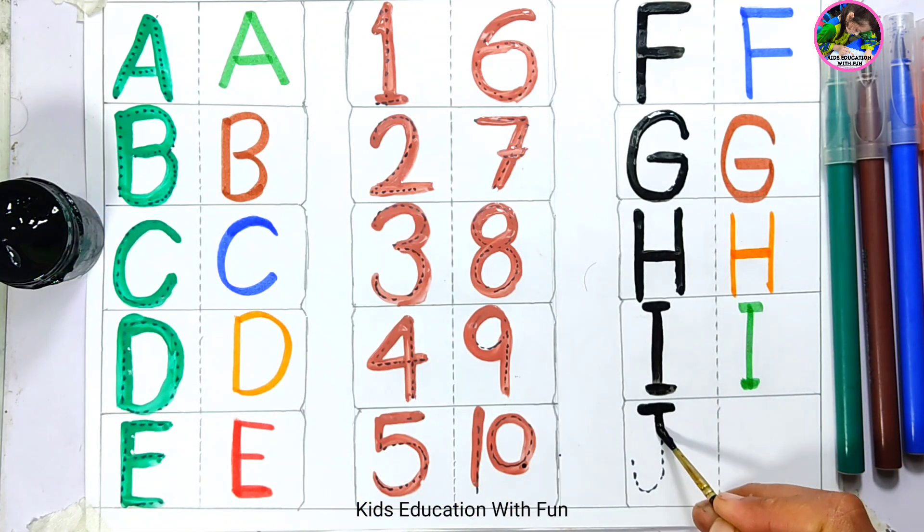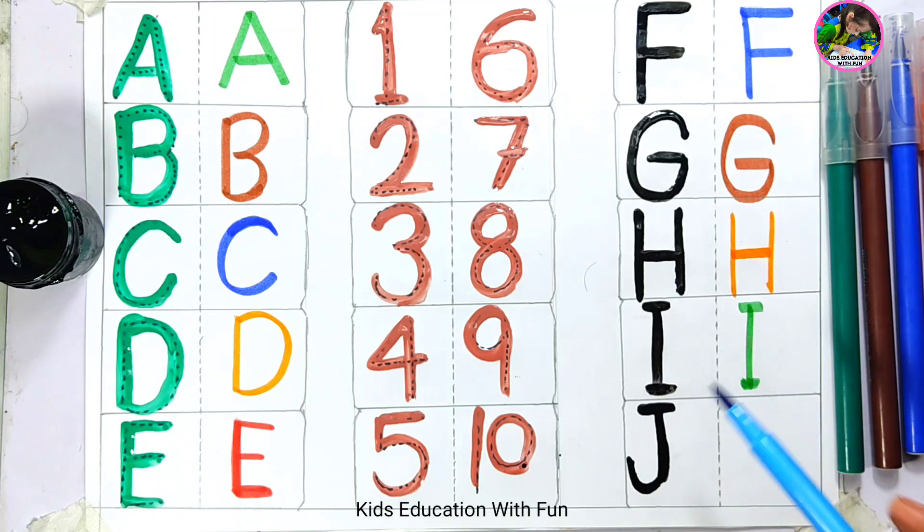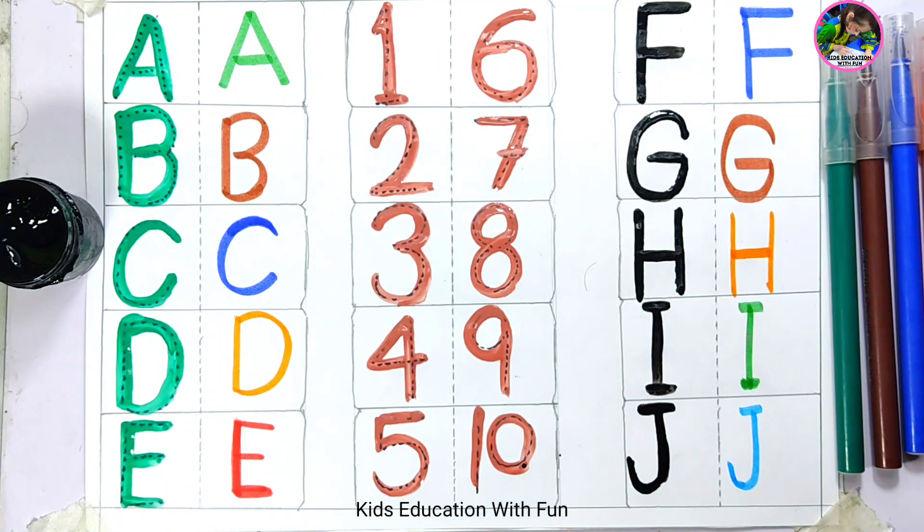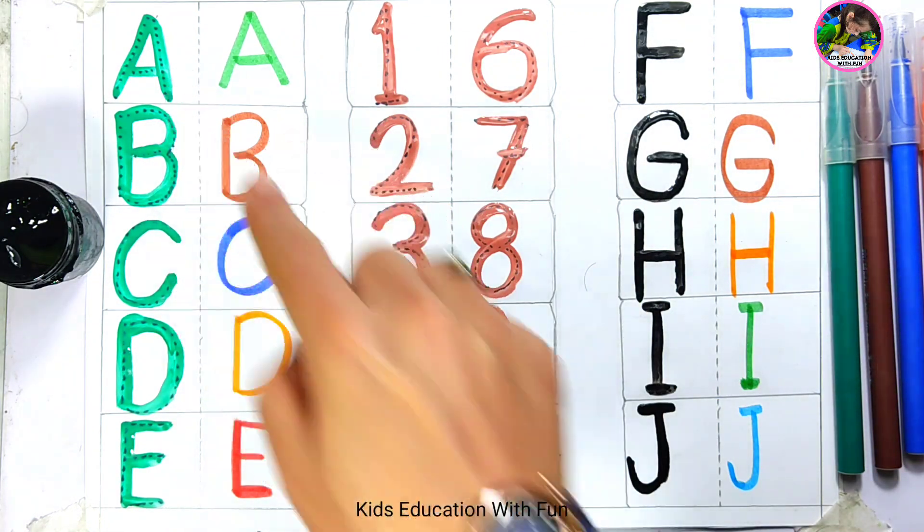Letter J. The last letter here is letter J, while they go up to Z. J is for juice. Letter J, J is for juice. Wow, we have done it, dear kids, we have done it from letter A to letter J and number 1 to number 10.